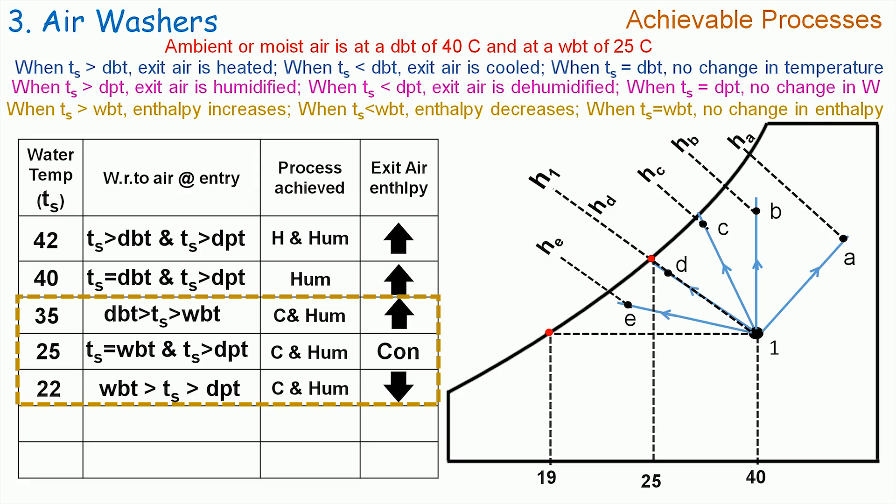Let us now supply the spray water at 19°C. Here TS is less than the dry bulb temperature, hence air is cooled, and TS is equal to dew point temperature, hence no change in specific humidity of the air. Therefore, the achievable process by the air washer is just cooling. If we plot it on the psychrometric chart, then process 1F will be representing it. The enthalpy HF is less than H1, hence the exit air enthalpy decreases.